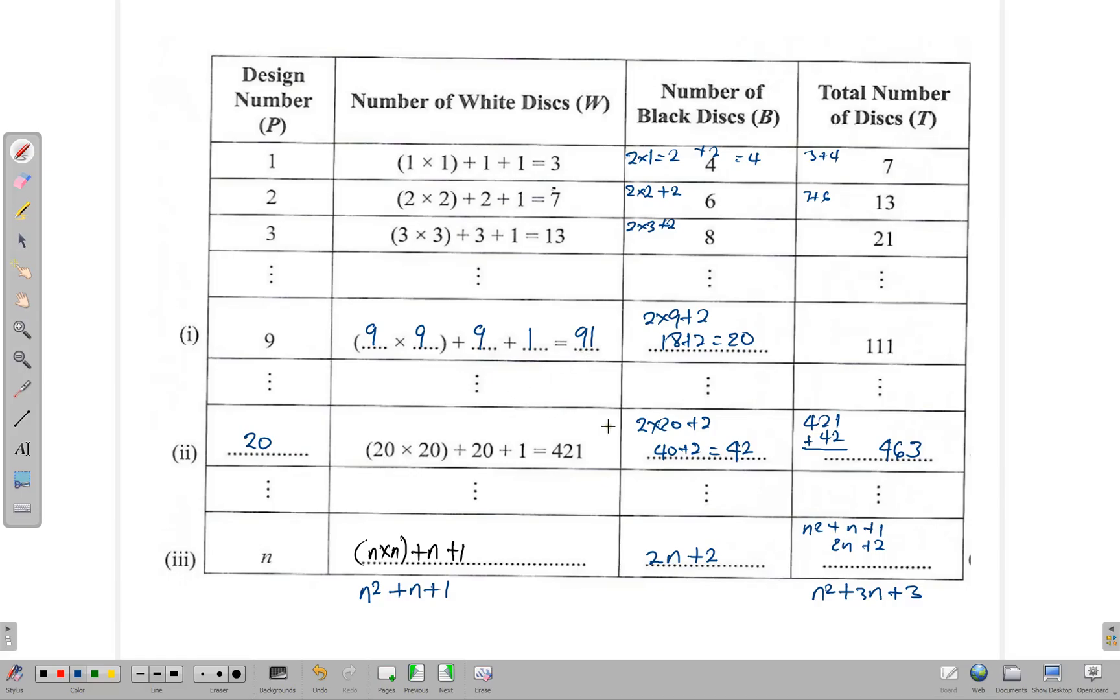So we have filled out this table. We have written down our generalization for n and we have filled out the missing sections and have completed the table.